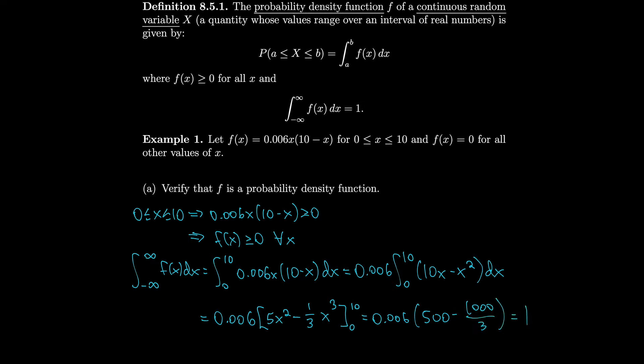It should make sense that the probability density function integrates to 1 over all possible values of x, because probabilities for every single possible outcome should add up to 1. In our case, integrating the probability density function is what gives us possible outcomes.